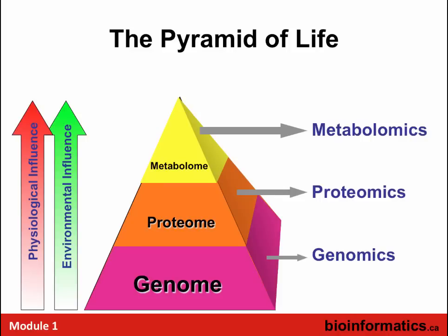We start with a pyramid picture. At the base is the genome, studied using genomics, next-gen sequencing, RNA-seq, and transcriptomics. As we progress up, genes code for proteins, and the study of proteins is proteomics. At the top — being the most important — is metabolomics. The idea is that subtle small changes in the genome are amplified up to the metabolome.